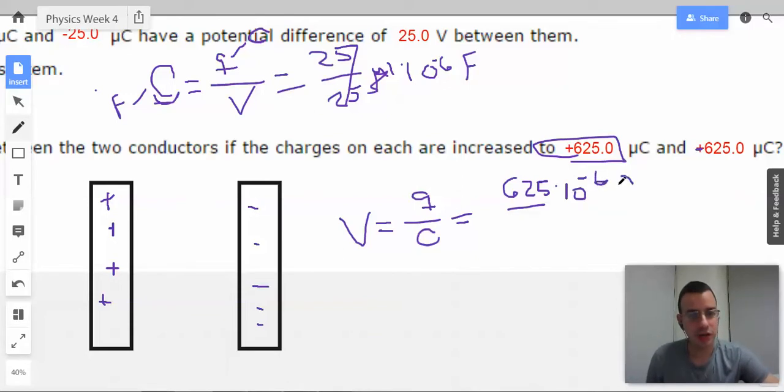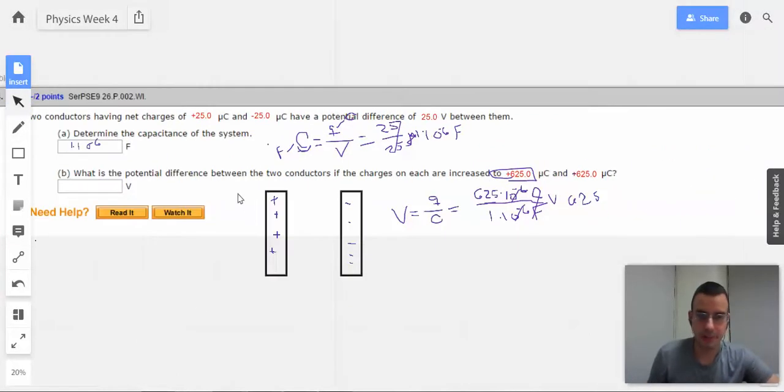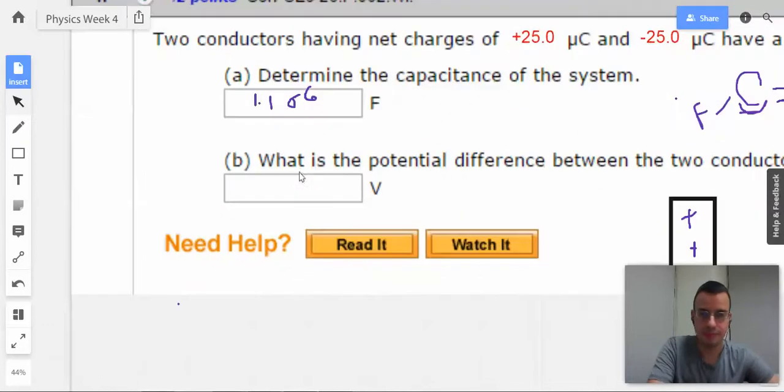I'm going to write coulombs here, just to show how easily this becomes confusing. And 1 times 10 to the negative 6th farads. So it's very easy to see this C and that C and think they're the same—they are not. Cancel, cancel. These then become volts, and we have 625 volts. As easy as that.